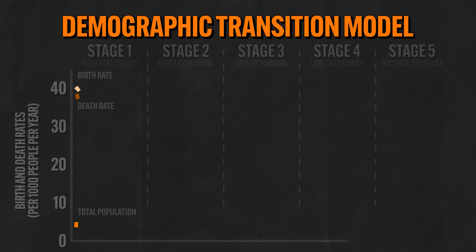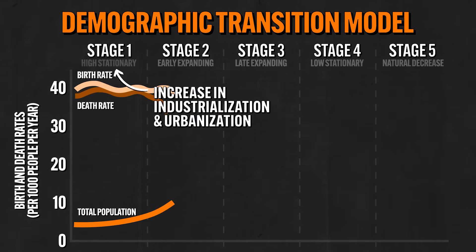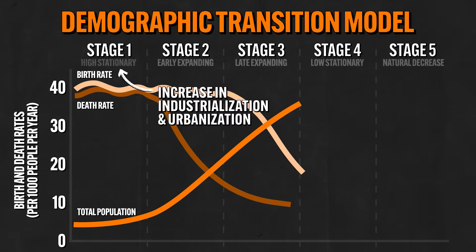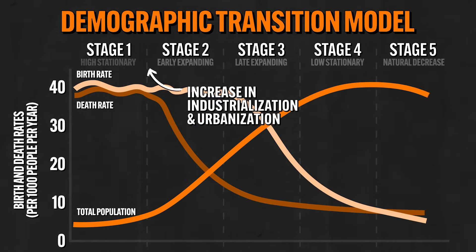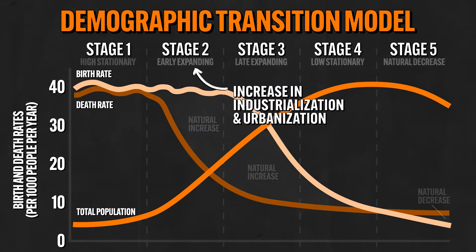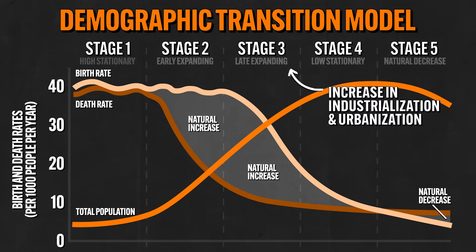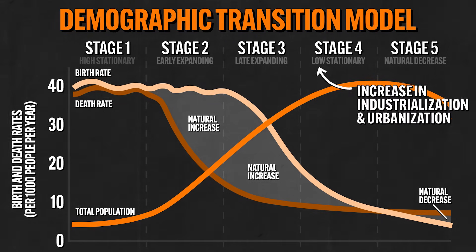Let's make a connection back to Unit 2 and the demographic transition model. As countries move through different levels of development — the various economic sectors — they are also becoming more industrialized and, as a consequence, more urban. That's just another way of saying that they're moving through the various stages of the DTM.